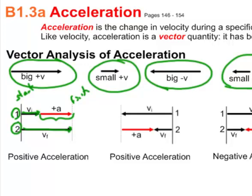Here's another example of positive acceleration. The first vector is a very large negative velocity — heading left — and then it changes to a much smaller negative velocity. We're still moving in the negative direction but we've slowed down. To connect these two vectors, the acceleration arrow must start from the first position and end at the second, drawn from left to right — that's a positive acceleration.